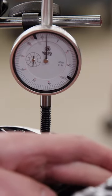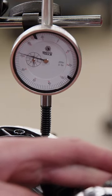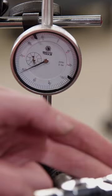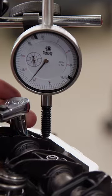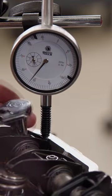We will zero a dial indicator on top of the pushrod cup, then slowly and evenly tighten down the rocker shaft. The spring pressure will compress the lifter plunger, and the distance the indicator moves is our measured lifter preload.